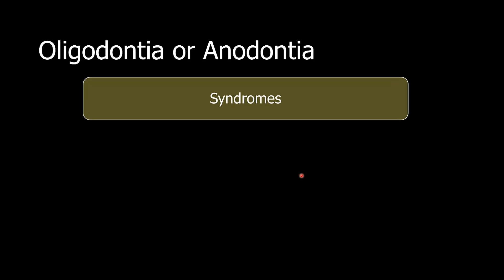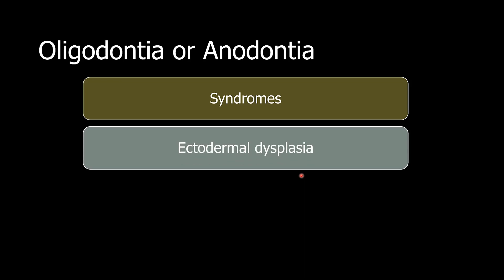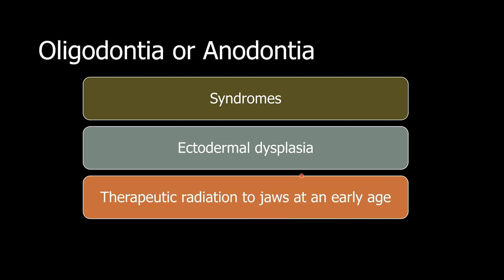Oligodontia or anodontia may occur because of several reasons. The most common is different kinds of syndromes. Of these, a common condition is ectodermal dysplasia. Also, therapeutic radiation to the jaws at an early age may cause oligodontia or anodontia. In many situations, you may also have microdontia and stunting of the roots.